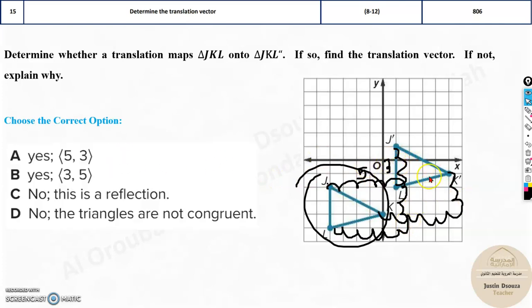Now over here, what is the translation vector? First of all, yes, this is a translation. This image is translated to J dash, K dash and L dash. But what is the translation vector? That is given as x, y. We saw 5 x units and 3 y units. So the first answer is the correct answer.